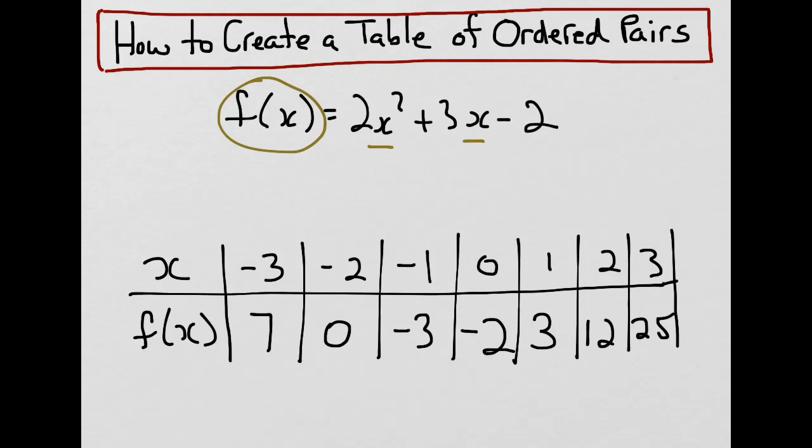We now have a completed ordered pairs table. And the x values and their corresponding f of x values represent ordered pairs. So, for example, negative 3, 7 is an ordered pair.